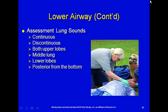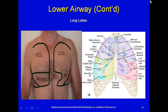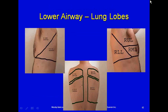Assessment of the lower airway includes listening to lung sounds. Are they continuous — heard throughout inspiration and expiration — or discontinuous? Stridor is heard only on inspiration; wheezing only on expiration. Listen to both upper lobes, the middle, and both lower lobes, including posteriorly. The lobes as shown indicate where to place your stethoscope to assess the upper, middle, and lower lobes on both sides and the bases.